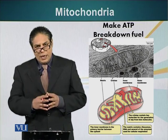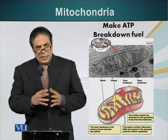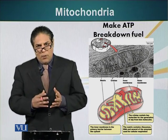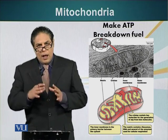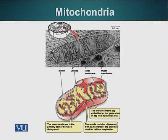Many enzymes that are present in the mitochondria are present on the membranes. By making these shell-like folds, which are called cristae, mitochondria can increase the surface area on which chemical reactions can take place.